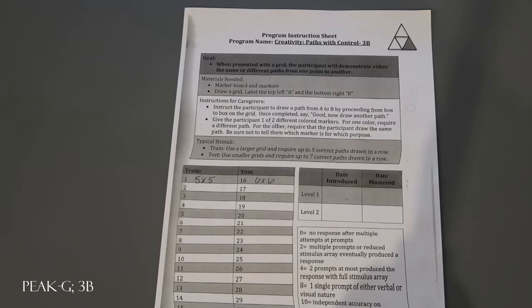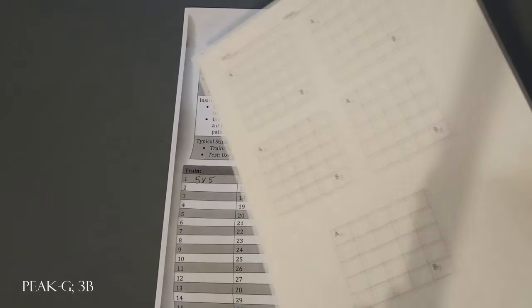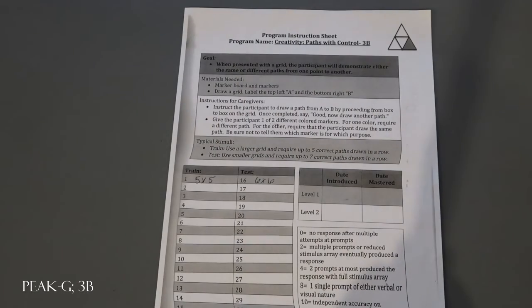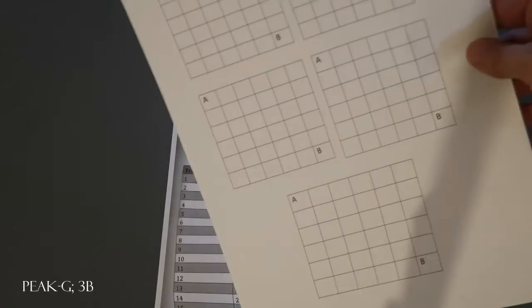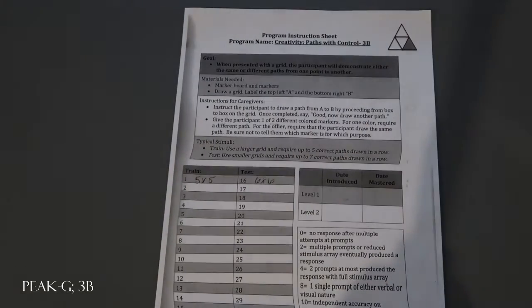We have a 5x5 for our train which is shown on here, and then we have a 6x6 on our test grid like this with our A to B already on there.